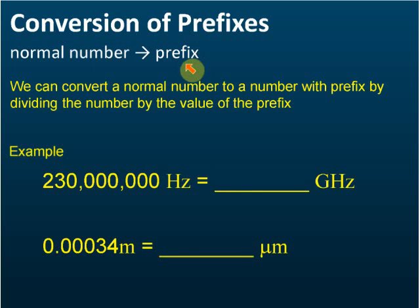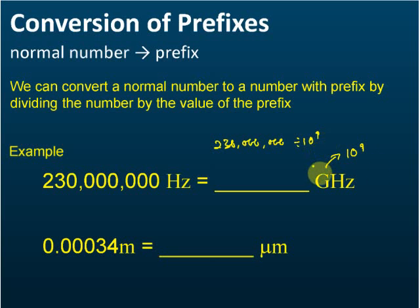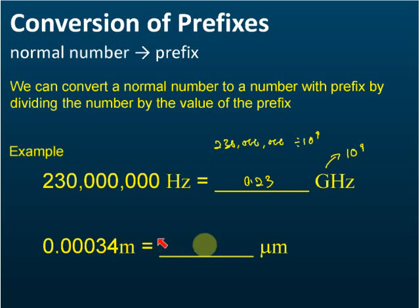For example, 2,300,000,000 hertz — we want to write it in gigahertz. We write 2,300,000,000 and divide by giga. Giga equals 10 to the power of 9, so we divide by 10 to the power of 9. For normal number to prefix we divide, and this equals 0.23 gigahertz.